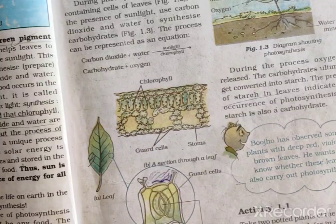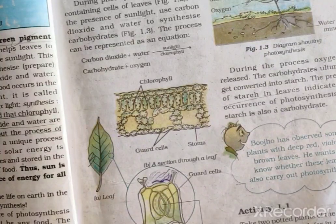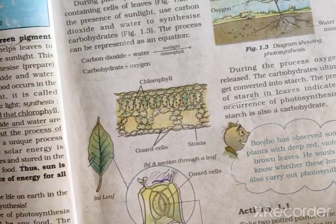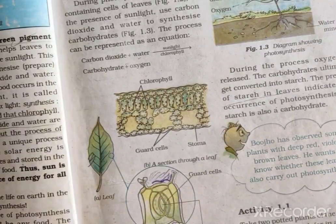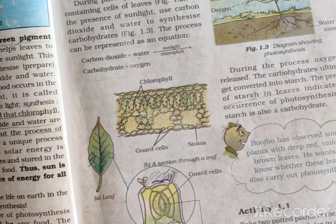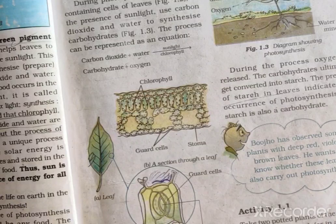The carbohydrates produced during photosynthesis ultimately get converted into starch. The presence of starch in leaves indicates the occurrence of photosynthesis. Starch is also a carbohydrate, so the presence of starch confirms that photosynthesis has taken place.